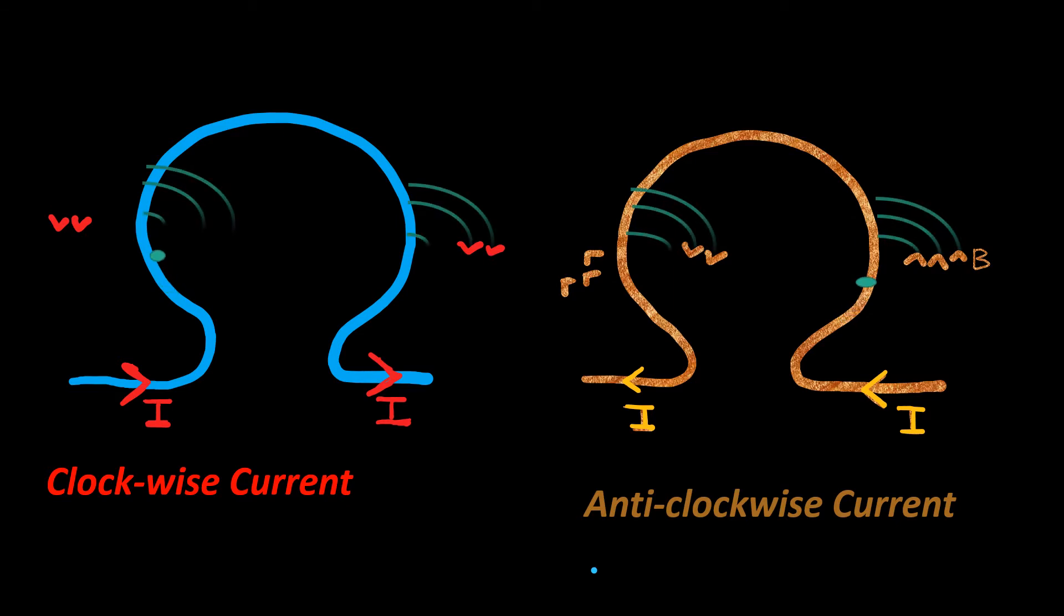If current in the loop is clockwise, the front face will be south and behind will be north. But if current in the loop is anticlockwise, the front face will be north and behind will be south.